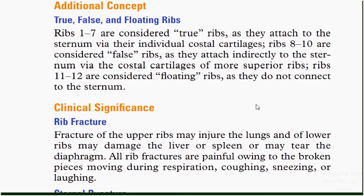True, false, and floating ribs: ribs one to seven are considered true ribs as they attach to the sternum via their individual costal cartilages. Ribs eight to ten are considered false ribs as they attach indirectly to the sternum via the costal cartilages of more superior ribs. Ribs eleven and twelve are considered floating ribs as they do not connect to the sternum.